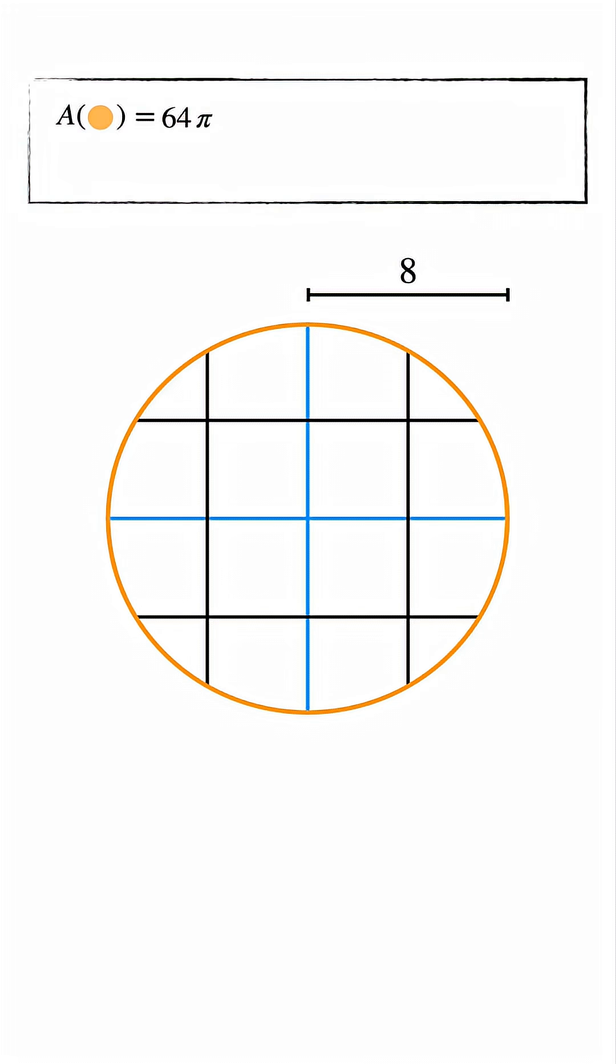Now look at the grid formed by the cuts. These cuts create four central squares, each with side length 4. That means each small square has an area of 16. And together, the central square region has an area of 64. Let's set this aside as well.